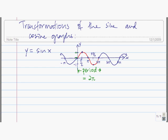This distance right here from the x-axis to the highest point is called the amplitude. The highest point on the graph of y equals sine of x is 1, so the amplitude of y equals sine of x is 1.